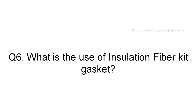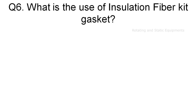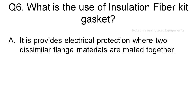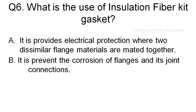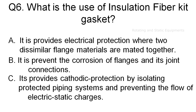Question 6: What is the use of an insulation fiber kit gasket? Option A: it provides electrical protection where two dissimilar flange materials are mated together. Option B: it prevents the corrosion of the flanges and joint connections. Option C: it provides cathodic protection by isolating a protected piping system and preventing the flow of electrostatic charges. Option D: all of the above.